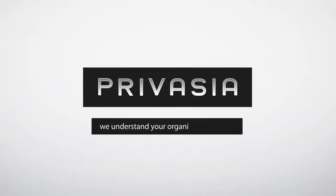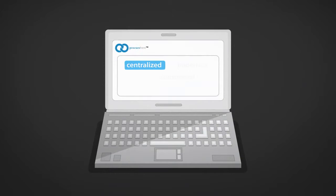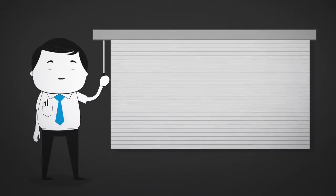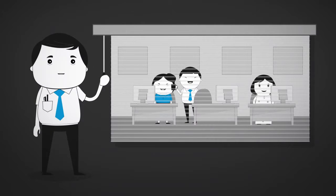At PrivAsia, we understand your organizational needs and have devised a centralized paperless and automated e-procurement system that simplifies your business processes. It allows greater transparency by giving you better control over your business activities.